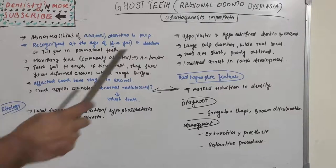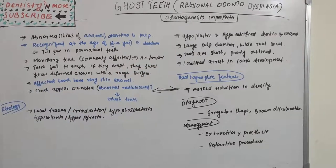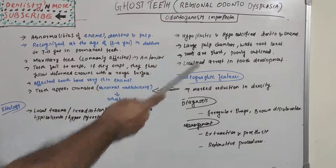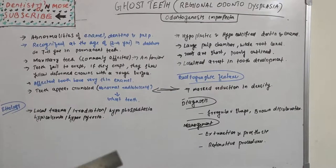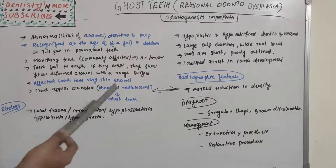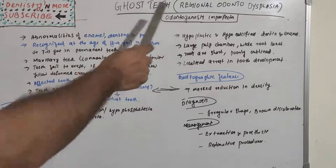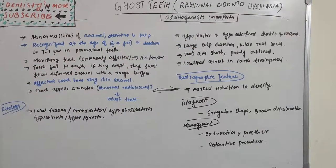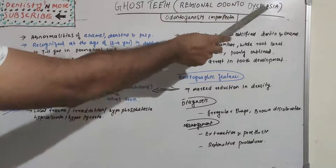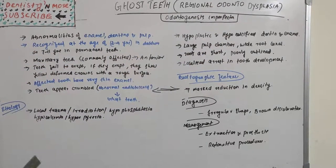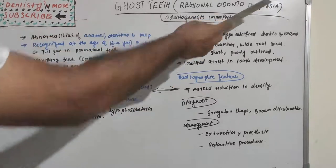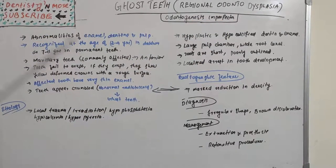The hypoplastic, hypocalcified dentine and enamel along with a large pulp chamber create the ghost appearance. There is a big pulp chamber with very thin enamel and very thin dentine. It is called regional odontodysplasia because it affects a particular region — 'odonto' refers to teeth, and 'dysplasia' refers to malformation or improper formation of cells.